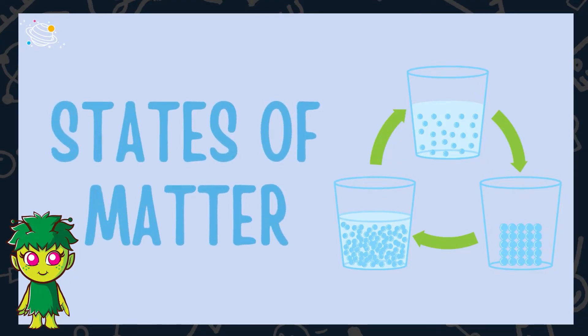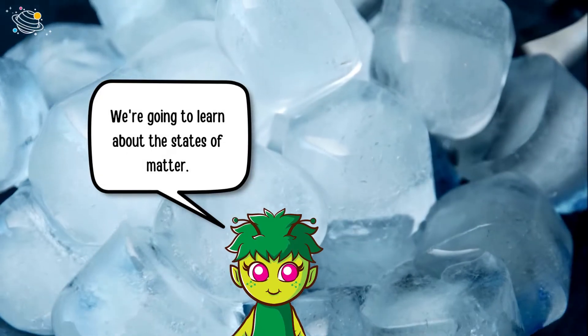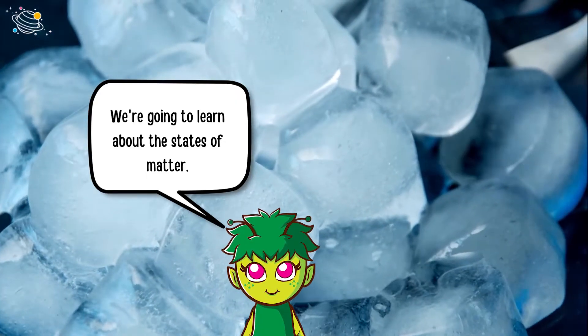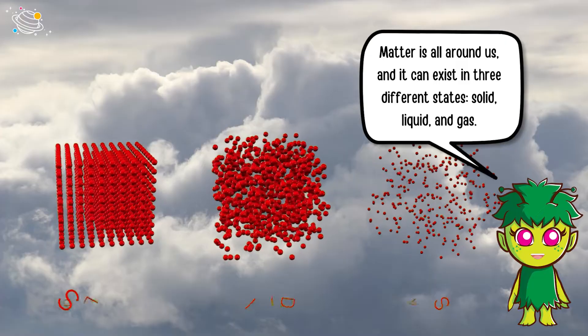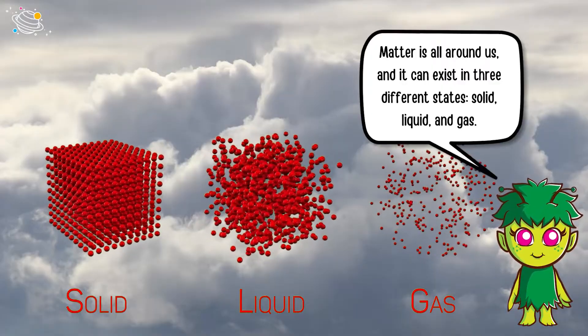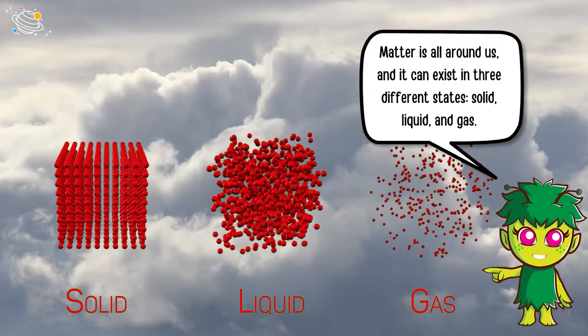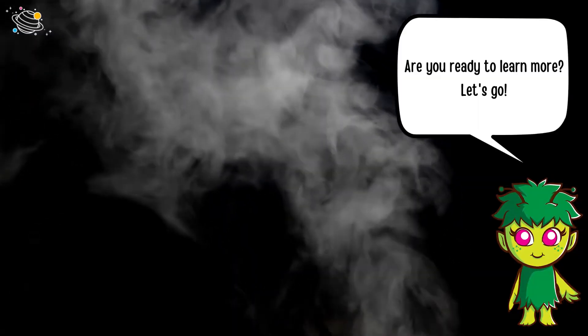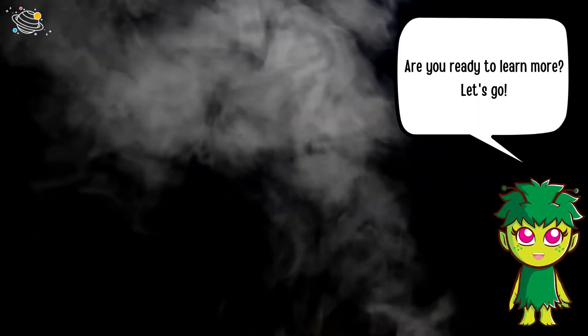States of matter. We're going to learn about the states of matter. Matter is all around us and it can exist in three different states: solid, liquid, and gas. Are you ready to learn more? Let's go!